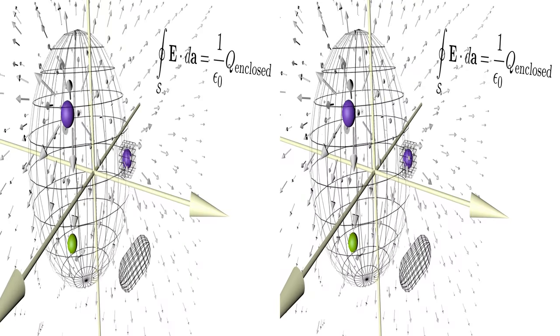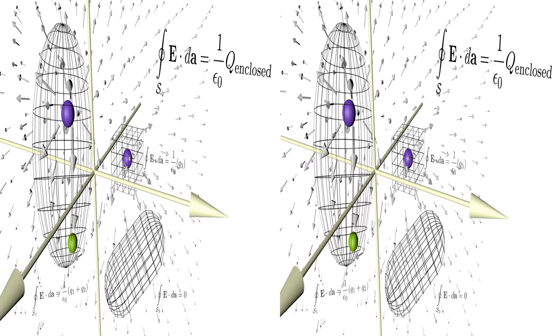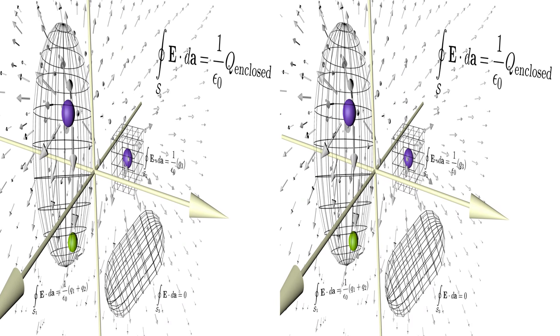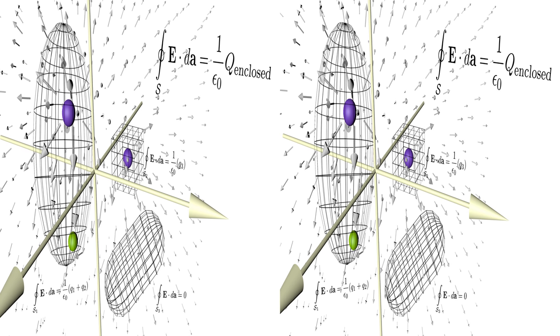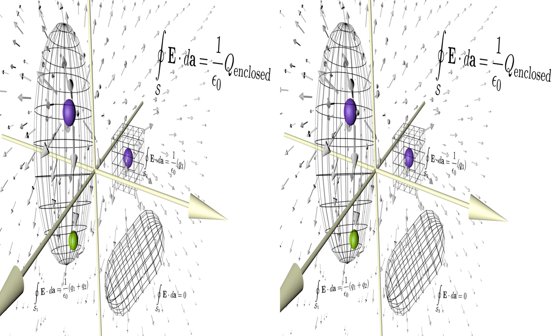Apparently, for any closed surface, the surface integral of the electric field is equal to the total charge that is enclosed by the surface. This is Gauss's law in integral form.